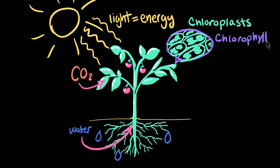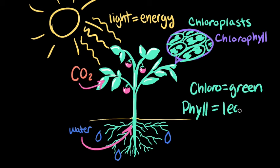Interestingly, chlorophyll is where leaves get their green color. To help you remember, think of chlorophyll like this. Chloro means green, and phil means leaf. So when you put them together, you get green leaf.